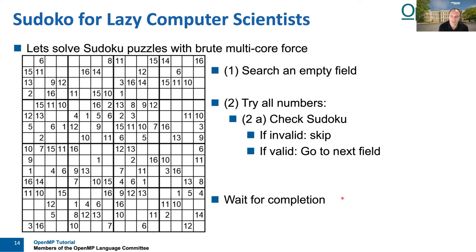I'll start with the tasking motivation and show you one of the really important problems in computer science for which there's no good solution with work sharing available — namely solving Sudoku boards. The algorithm starts with an empty field, tries out all the numbers — putting in, say, 1 — then checks if it's a candidate number. If it is a candidate, it takes a copy of the board, puts in the number, and calls the same algorithm again recursively. This will evaluate all possible combinations and find all solutions. The code and problem is very simple, but this pattern is really important — it appears in parallel graph searching, parallel sorting, Fibonacci, and many others.